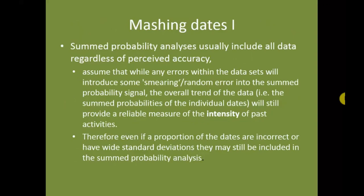In my draft I put this as 'mashing dates,' and I thought about calling it 'analyzing dates,' but our terms are quite loaded. I wanted to keep 'mashing' because we're pushing it all together and trying to make sense of it. The summed probability analyses put all the dates in — they include historic dates with large standard deviations and don't remove outlier dates — because what they're trying to do is identify peaks of intensity of activity. Even if you've got a date that's way off, it's not really going to impact on those peaks.